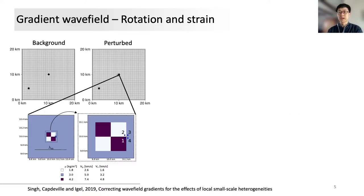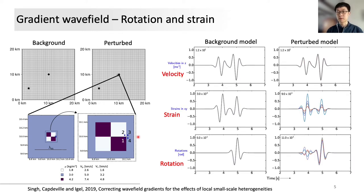This has been verified in Singh et al. 2019 with 2D examples. They inserted a velocity perturbation with a checkerboard pattern into a constant background models. Particle velocity, strain, and rotational components are simultaneously recorded at four points represented by the numbers across the edge of the perturbations. Their waveforms under the background and perturbed models are then compared with each other. As shown in the right panel, strain and rotation components present much more evident difference in two models, implying that gradient wavefield is indeed more sensitive to local small scale structures than particle velocity.